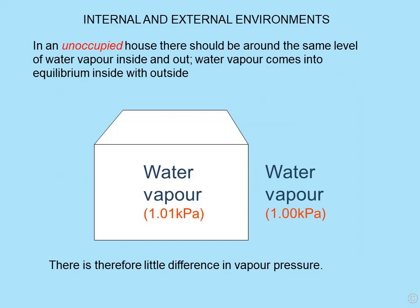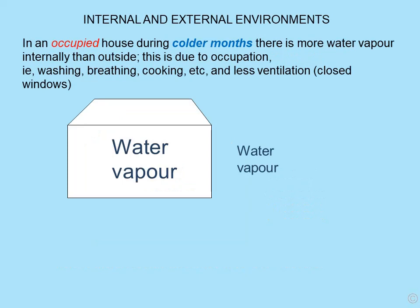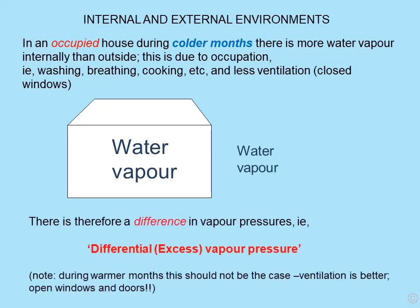Internal and external environments. In an unoccupied house, there's roughly the same level of water vapour inside as out — it simply comes into equilibrium between the two, with very little difference in vapour pressure. What is a house without anybody living in it? An empty box — there's no water vapour being generated internally. However, if we look at an occupied property during the colder months, there is more water vapour internally than outside, simply due to occupational activities. Thus, we now have a difference in vapour pressures between inside and out, and this is known as the differential or excess vapour pressure.